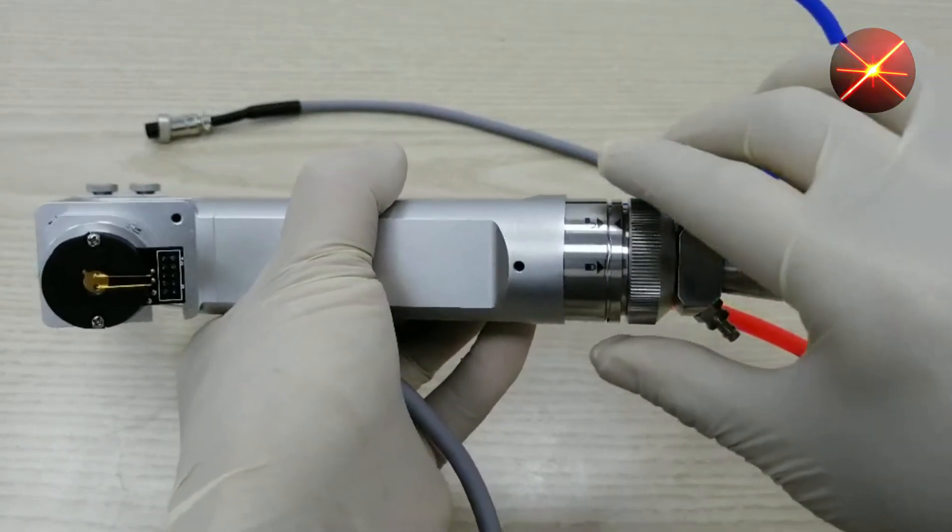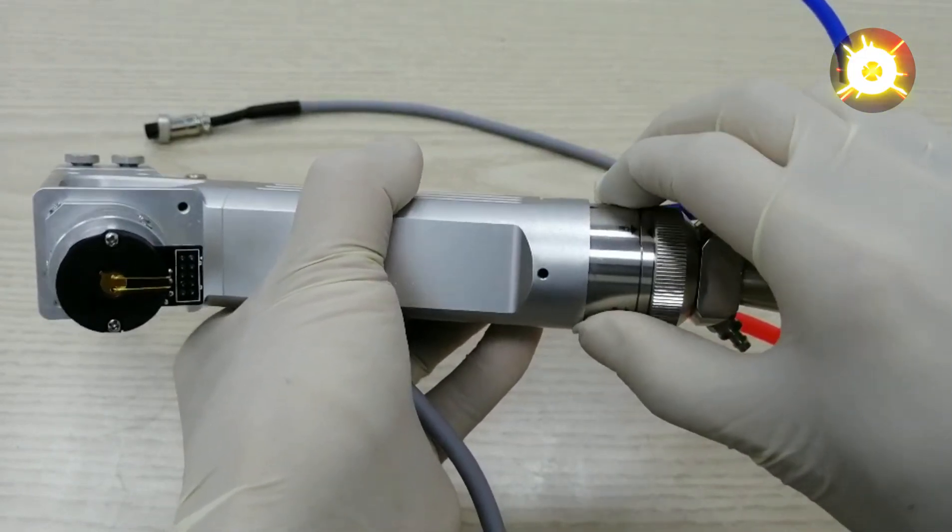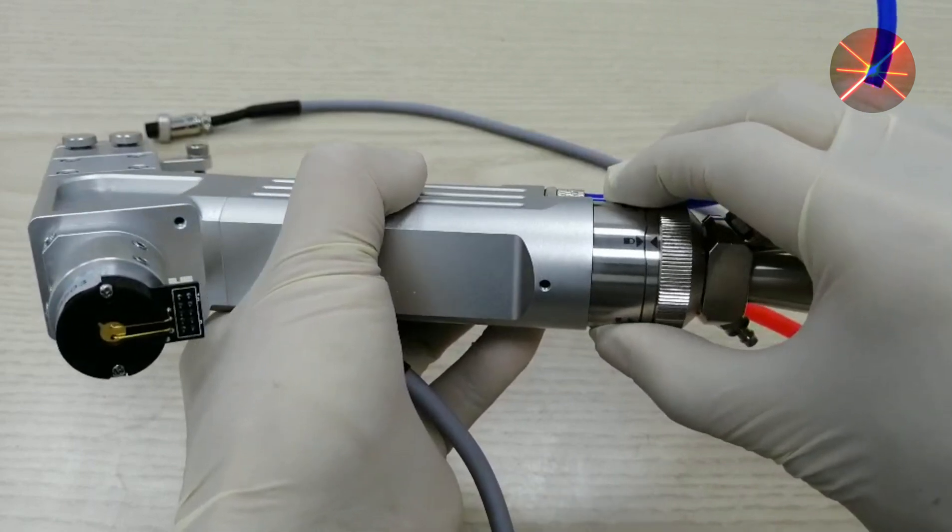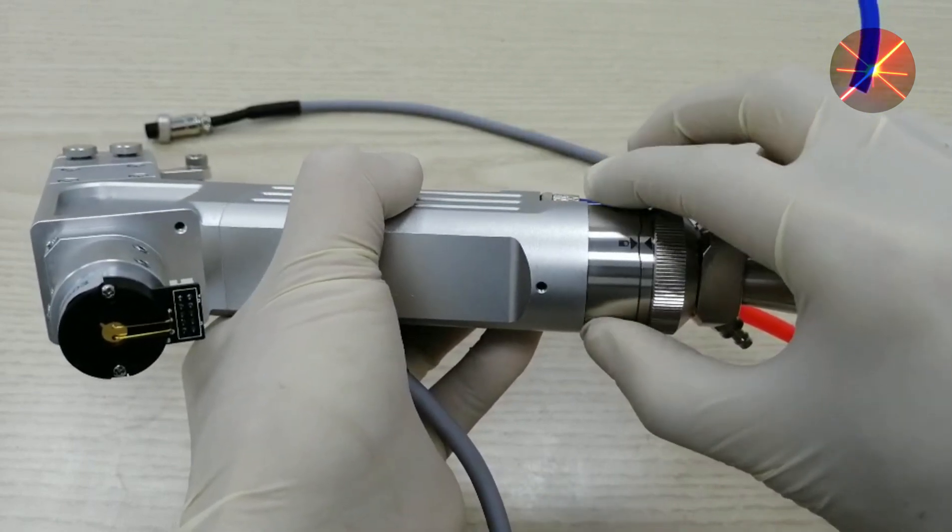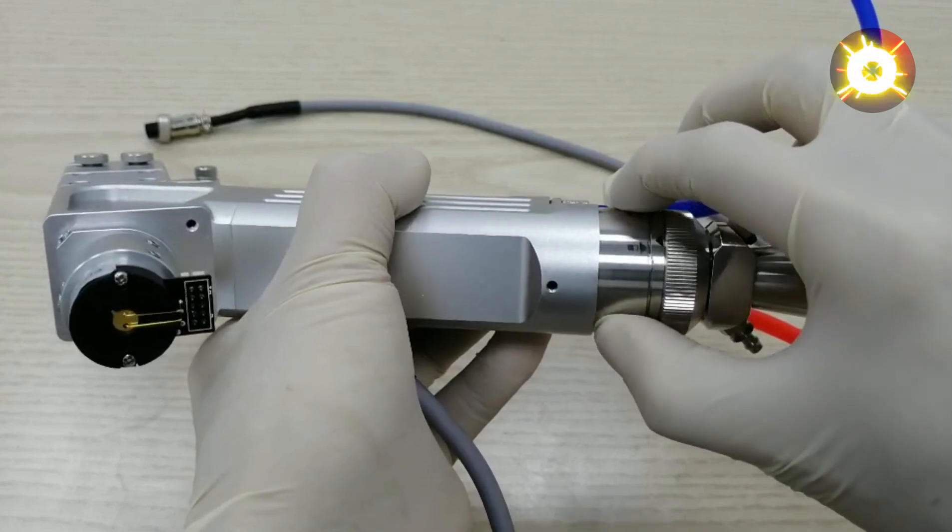After that, rotate clockwise to the locked position. Rotate counterclockwise to unlock it, clockwise to lock it.